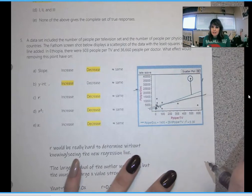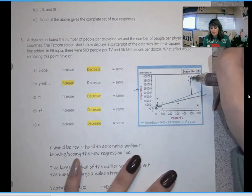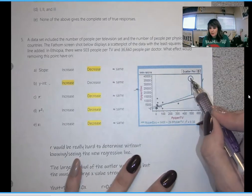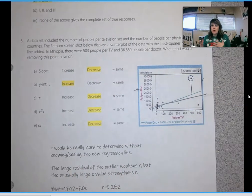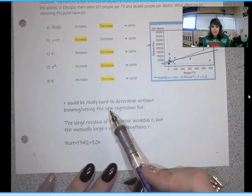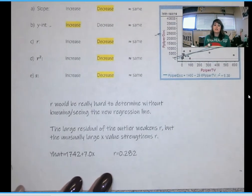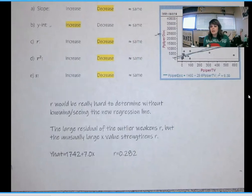And here's why. A point that has a very large residual will weaken r. So this being so far away from the line of prediction weakens r. But it is also an outlier in the x-direction which strengthens r. So I didn't know what the overall effect would be if I took the point out because one of the things would weaken r and the other thing would strengthen r. And how am I to know which one would end up being more? And that's what I have written down here. r would be really hard to determine without knowing or seeing the new regression line. The large residual of the outlier weakens r, but the unusually large x value strengthens r. So when you take it out, what will the overall effect be?